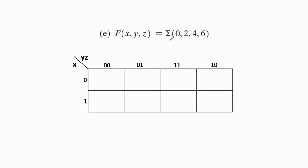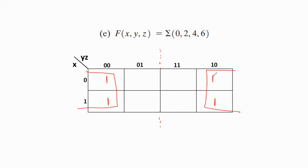Next, f(x,y,z) = Σ(0,2,4,6). Instead of making two pairs, it is better to make a group of four ones. When we fold the K-map, these two ones overlap with the other two, forming a quad. With this single group of four, lying in both rows: x is eliminated. For y, values are 0 and 1, so y is also skipped. For z, both values are 0, so only z̄ remains. Therefore the simplified expression is f(x,y,z) = z̄.